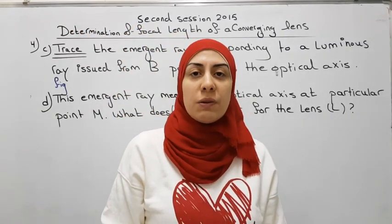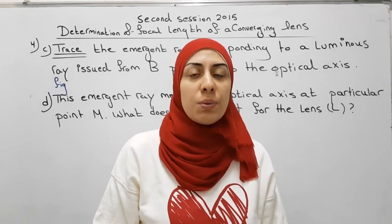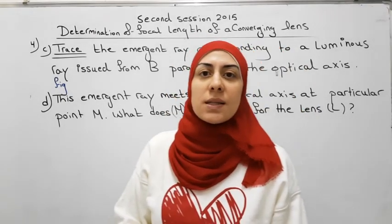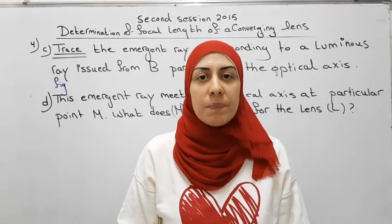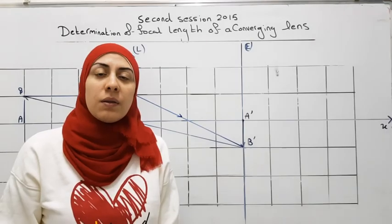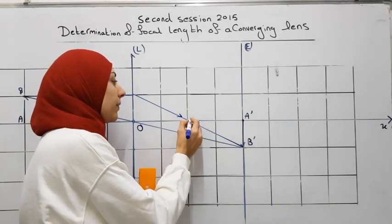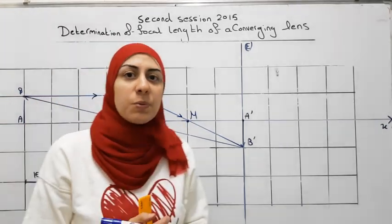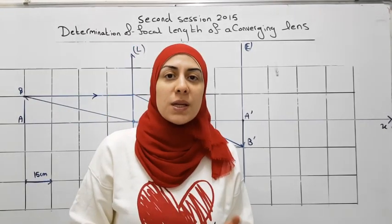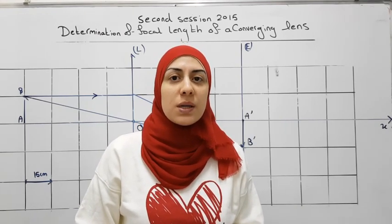When we draw a ray from B parallel to the optical axis, the emergent ray continues passing through B'. This emergent ray meets the optical axis at a particular point M. The intersection of the emergent ray with the optical axis is point M. Since this ray is parallel to the optical axis, it continues passing through F'. It means that point M is the image focus F'.